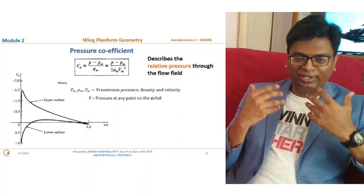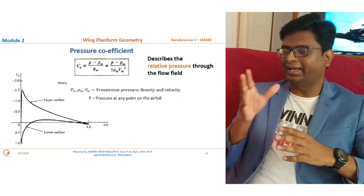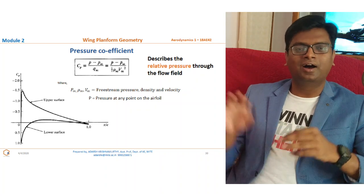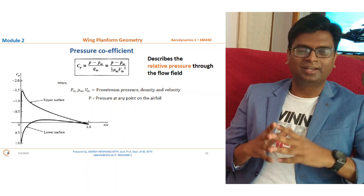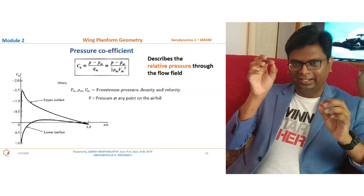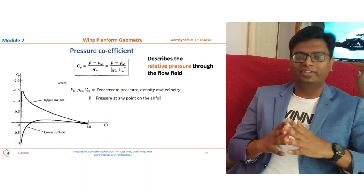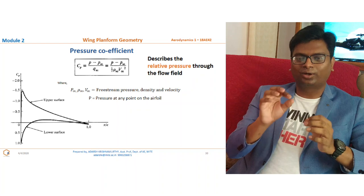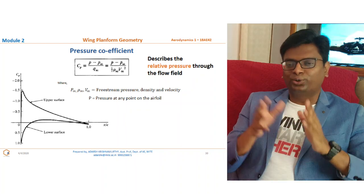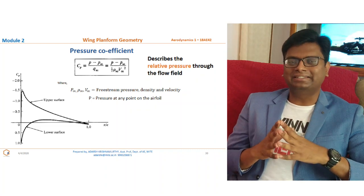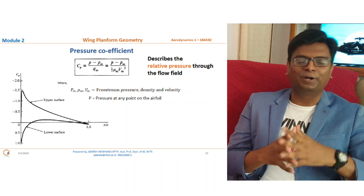The pressure coefficient tells us, at any point on the chord line on the surface of the airfoil, what the pressure is with respect to the free stream velocity. It relates the local pressure with the free stream pressure. In the graph, the coefficient of pressure is plotted from x/c = 0 to x/c = 1. What is this x/c — why can't I simply write chord length?